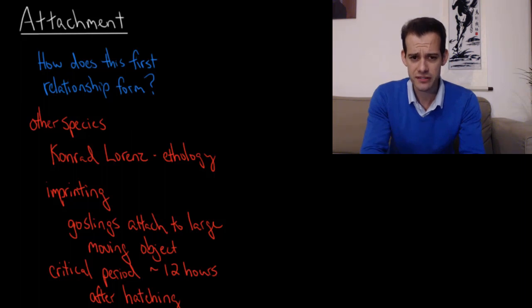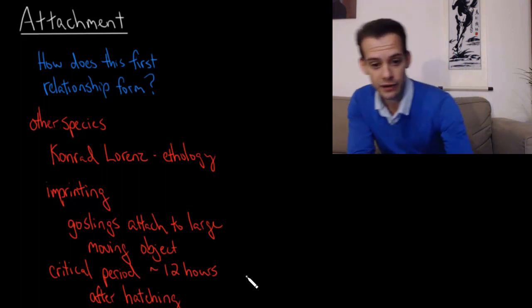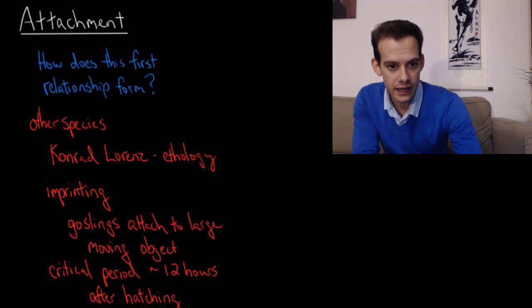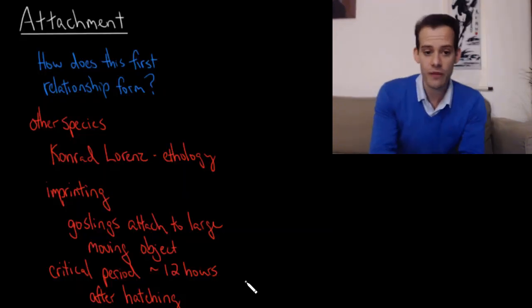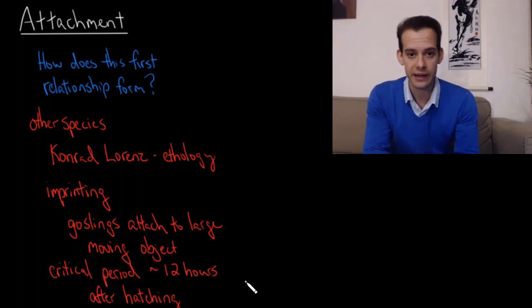So how does this first relationship actually form? One way we can try to answer that question is to look to other species, and this brings us to the work of Conrad Lorenz, who along with Nicholas Tinbergen and Karl von Frisch is considered one of the founders of ethology, the study of animal behavior. One of the things that Lorenz investigated, and in 1973 won the Nobel Prize along with Tinbergen and von Frisch, was the idea of imprinting.